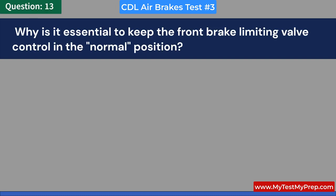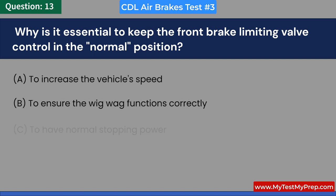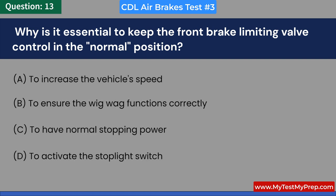Why is it essential to keep the front brake limiting valve control in the normal position? A. To increase the vehicle's speed. B. To ensure the wigwag functions correctly. C. To have normal stopping power. D. To activate the stoplight switch. Answer: C. To have normal stopping power.